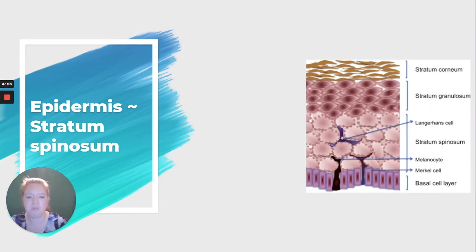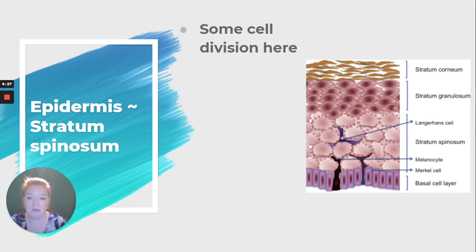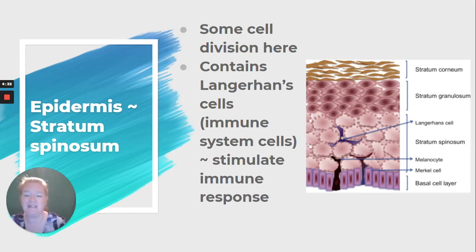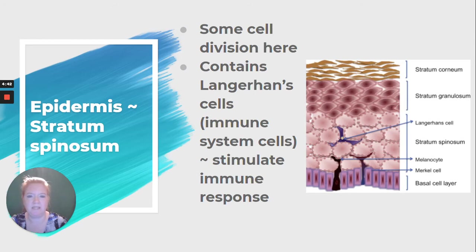Below that we have the stratum spinosum. There's some cell division happening here. It contains those Langerhans cells that we talked about in the previous lesson — the immune system cells that can capture and deal with some invaders on their own, but also stimulate the immune response when necessary.